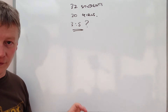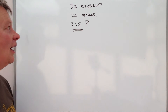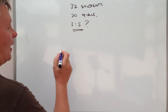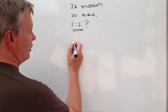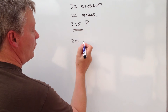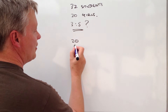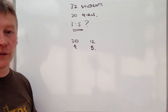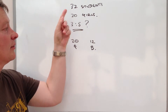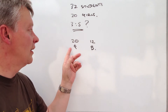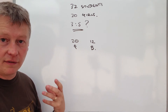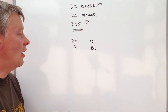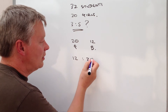We've got 32 students altogether and 20 of them are girls. So if 20 of them are girls, then 12 of them must be boys — because if there are 32 altogether, 20 girls means there must be 12 boys. So we've got a ratio of 12 to 20.